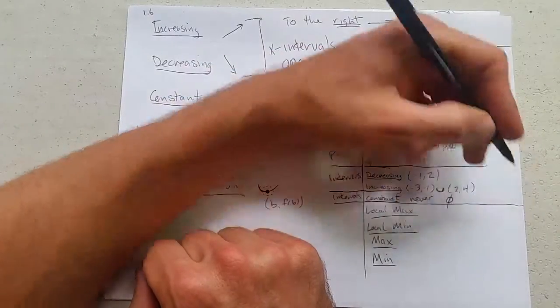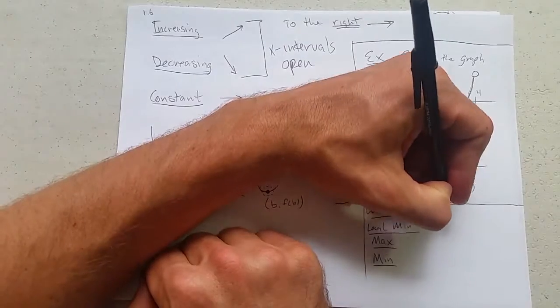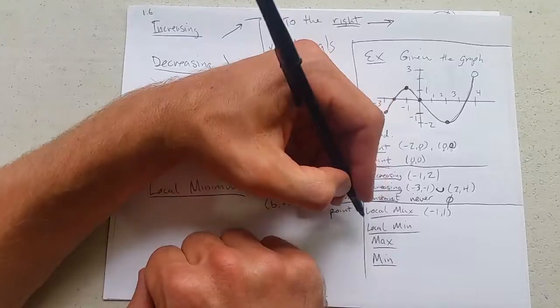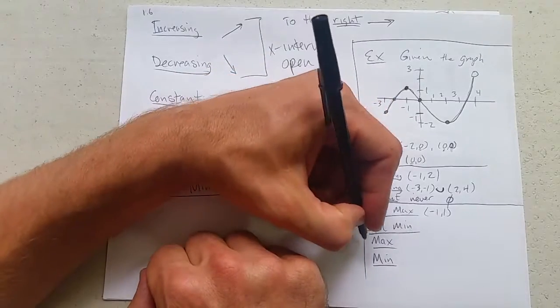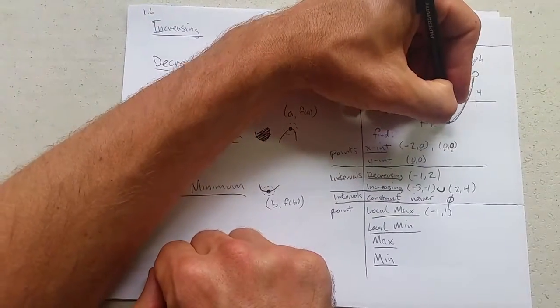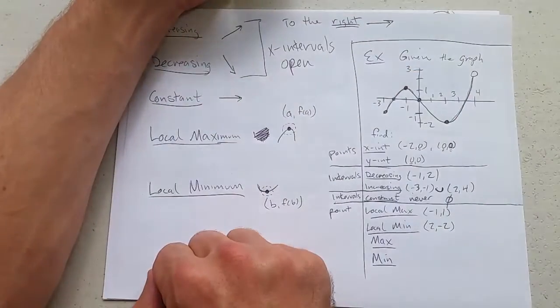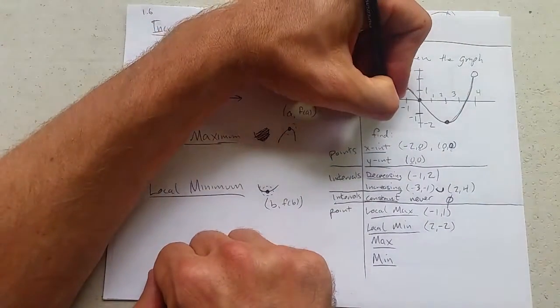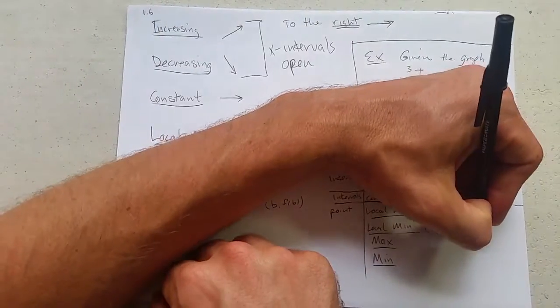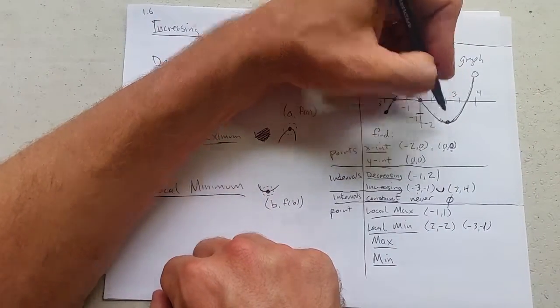Alright. Local max and local min. Local max right here. Negative 1, comma 1. And this is a point. Local min is going to be a point. As is min and max. So what is local min? So right here, we've got local min, 2, negative 2. We have another local min. And it's going to be over here. Which is negative 3, negative 1.